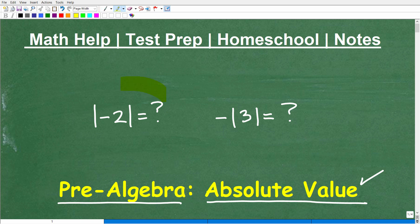As a matter of fact, absolute value examples are things like this. This is the absolute value of negative 2, and this is the negative or the opposite of the absolute value of a positive 3.